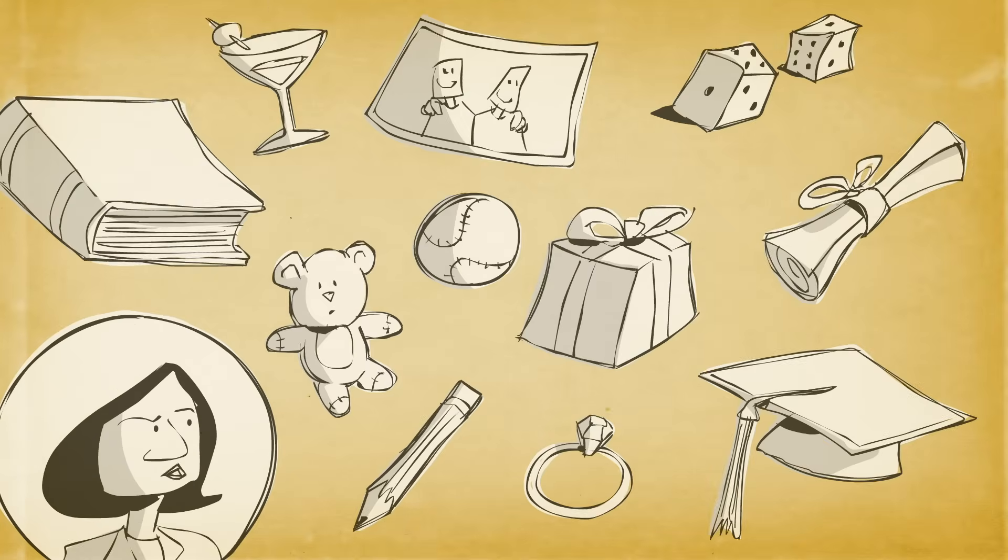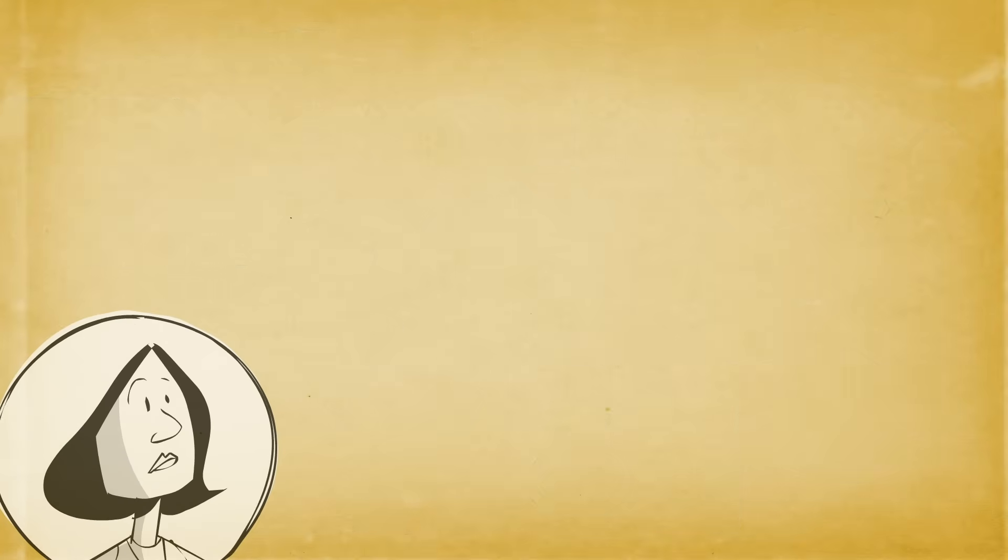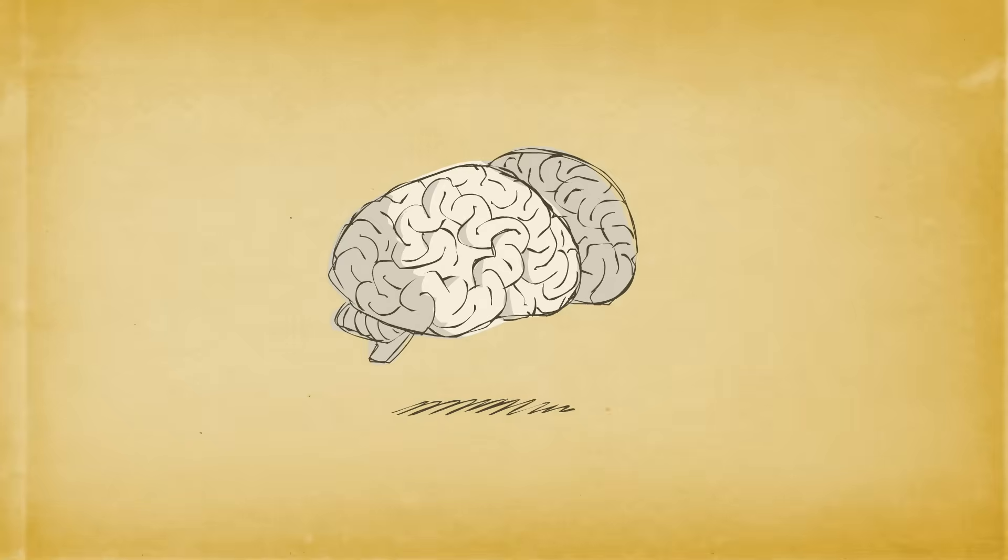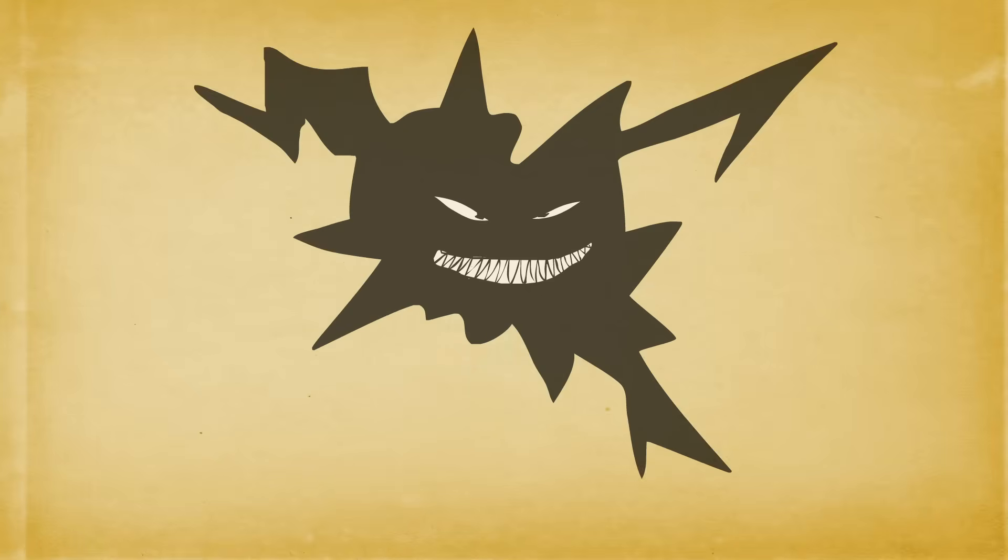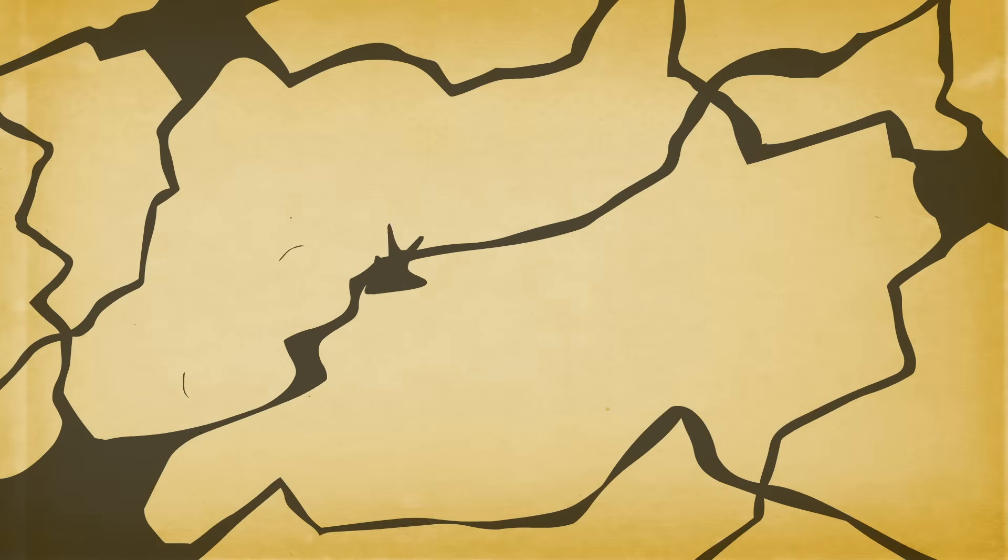And why do memories eventually fade? Let's look at how memories form in the first place. When you experience something, like dialing a phone number, the experience is converted into a pulse of electrical energy that zips along a network of neurons.